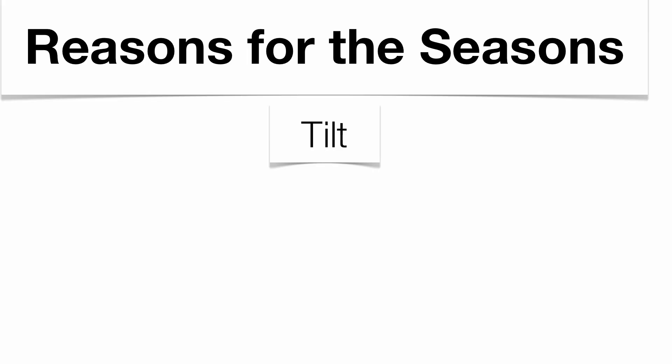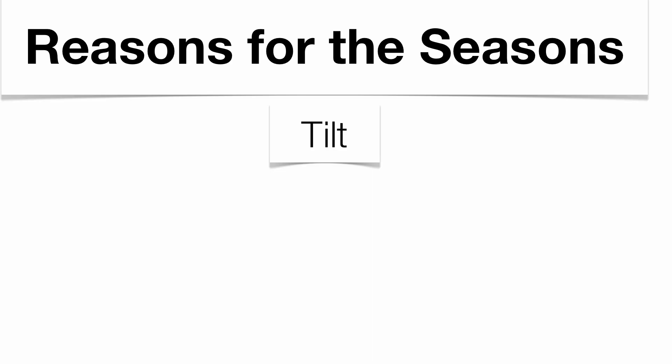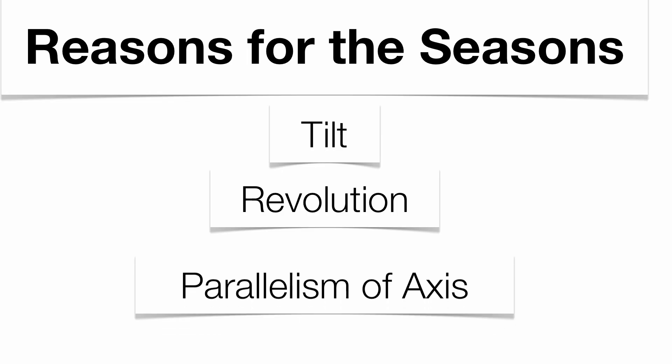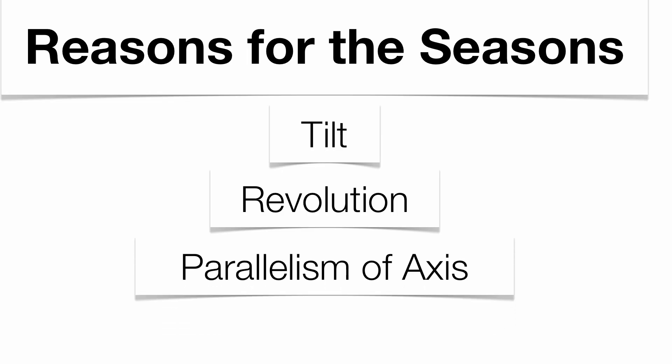Now we do have some reasons for the seasons. Revolution is going to be a big one, but it's not the number one reason. The tilt of our axis is the main factor. If we didn't have a tilt, our temperature here in New York would be about 60 degrees year-round and we wouldn't have any seasons. The fact that we have a tilt and a curved surface means the sun's insolation hits the surface at different angles based upon the tilt of the axis — that's why certain latitudes are hot and certain latitudes are cold. Revolution and the parallelism of the axis also play a role; parallelism just means our axis always points to Polaris, staying consistent as our trip around the sun continues.